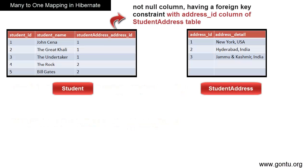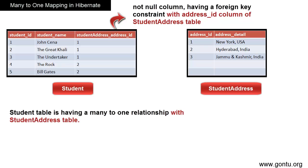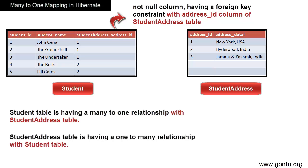For example, consider two tables in the database: student and student address. Clearly, many records in the student table are linked to a single record in the student address table. So student has a many-to-one relationship with the student address table, and student address has a one-to-many relationship with the student table. The mapping column lets you figure out which student record is linked to which student address record.